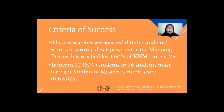The criteria of success: this research is successful if the student scores on writing descriptive text using mapping pictures has reached at least 60% of the KKM score of 75. It means 22 or 60% of 36 students must have got the minimum mastery criteria score, KKM 75.